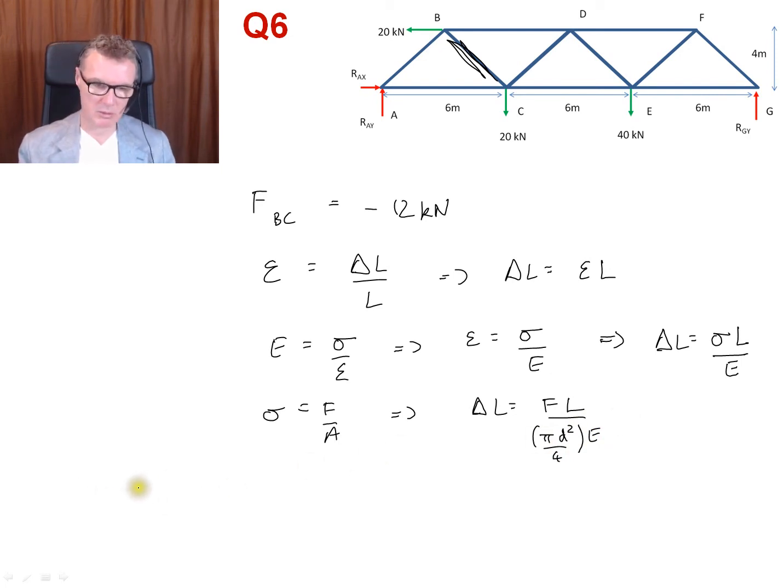So what numbers do I need to put in there? Change in length equals force is 12, we'll ignore the sign. What's this length here? Well, we worked out it was a 3-4-5 triangle. So 3 here, 4 here, and 5 there. So the length is 5.